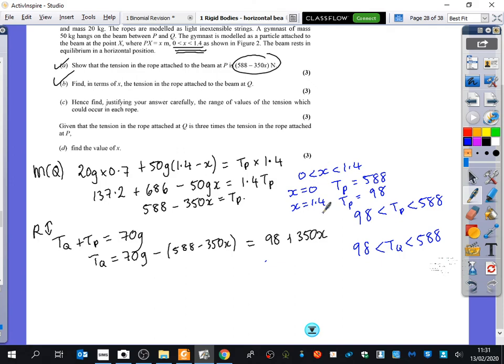It then says, given that the tension in the rope attached to Q is three times the tension in the rope attached at P, find the value of x. So let's just write that down as a sentence. The tension in Q is three times the tension in P. This is for part D of the question.